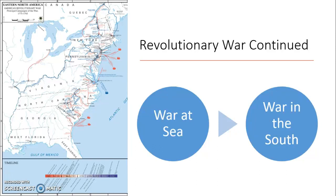The war in the South refers to fighting in the southern colonies. The British wanted to shift the fighting south because they hoped to find more success there, due to a larger Loyalist population that would cause more division among the colonists. England was able to capture both Savannah, Georgia, and Charleston, South Carolina, finding success in the southern colonies.